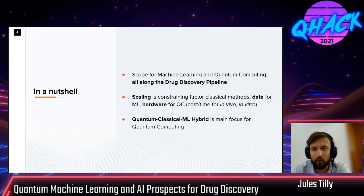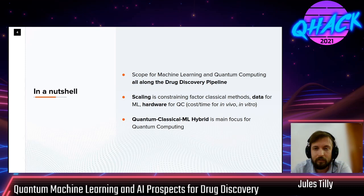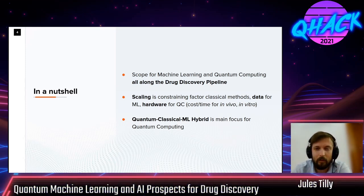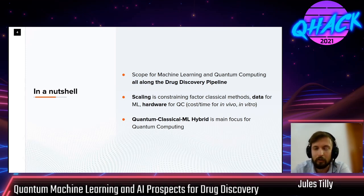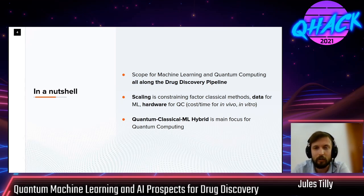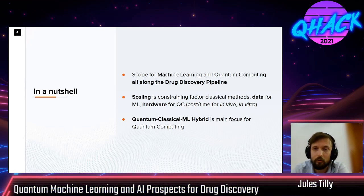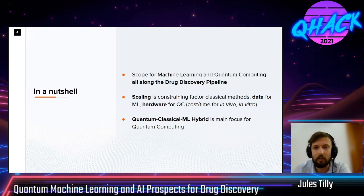For machine learning, the constraining factor is data, and generating consistent, solid data is a big problem across the industry. For quantum computing, it's hardware — still a few years down the line, but there are quite a lot of hopes that it will be very useful. For in vivo and in vitro, the constraint is cost and time. Also worth noting: this is a conference about quantum machine learning, but most of the methods we'll discuss are quantum computing rather than directly quantum machine learning, with some being hybrid between quantum and machine learning.